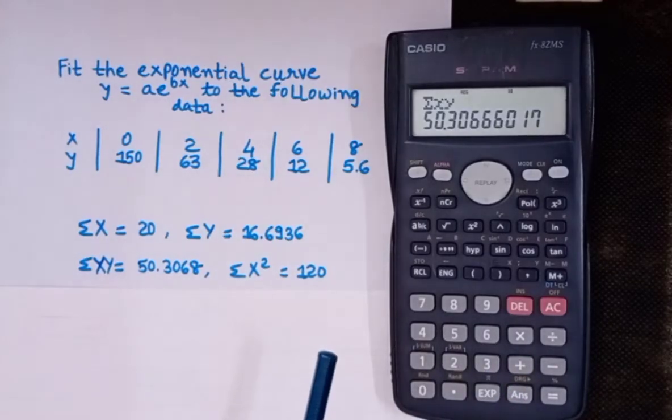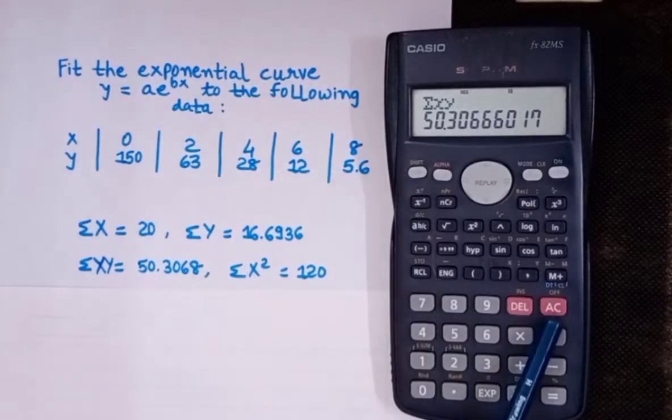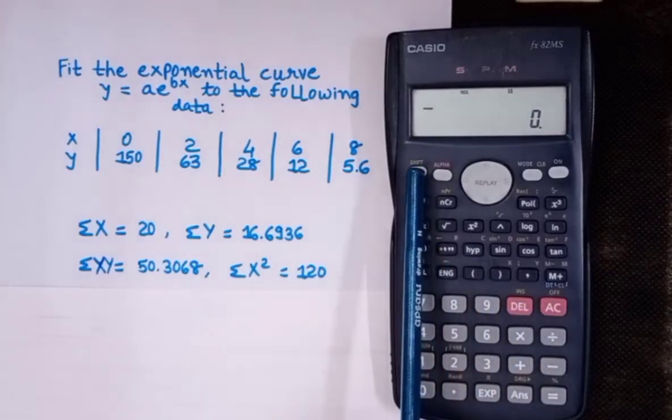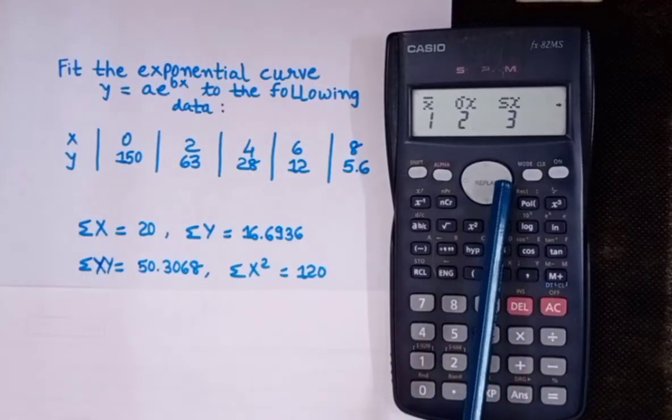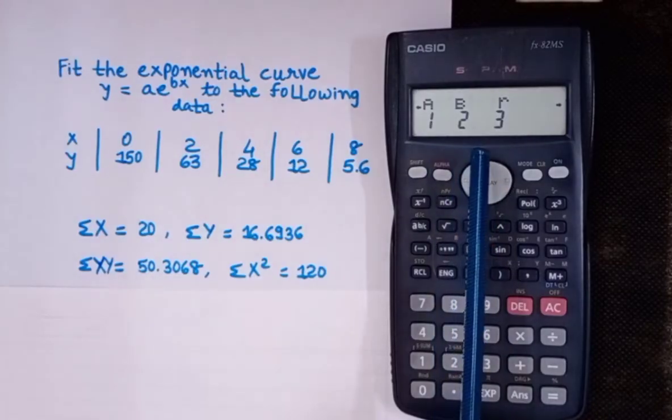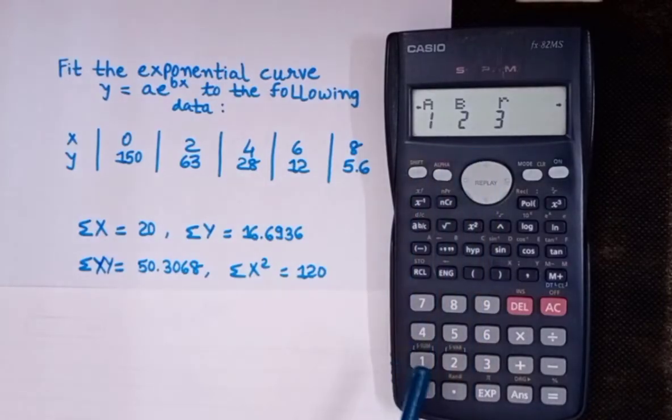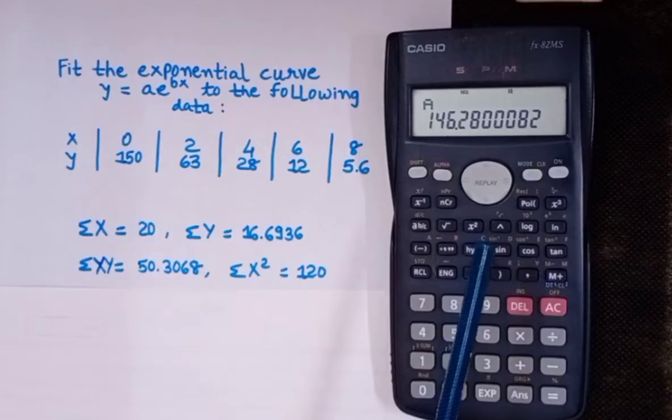Next, we'll find out the values of a and b. For that, click on AC, then press shift, then press S-y, that is press 2. From here press next, again next. As you can see we have a and b. First I'll find out a, so press 1. A is equal to 146.28.